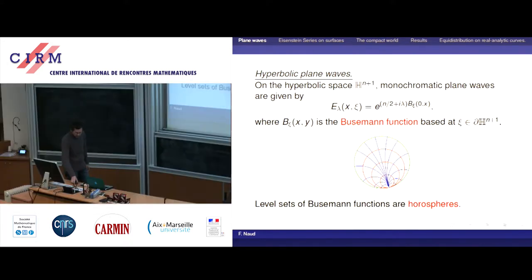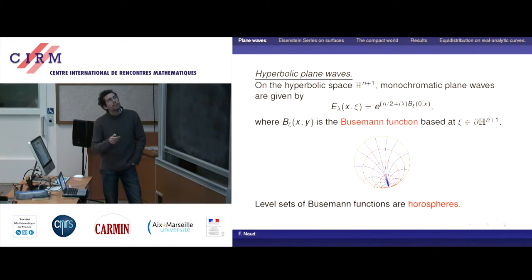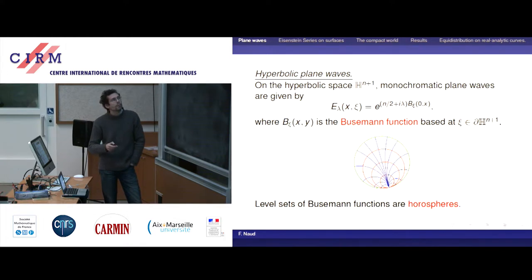In the hyperbolic setting, what replaces the standard plane waves are given by these expressions. There is a slightly different factor, related to the bottom of the continuous spectrum of the Laplacian — it's just a convention to make things easier. What replaces the Fourier phase is given by so-called Busemann functions, and the level sets of Busemann functions — the wavefronts — are given by horocycles. Xi is living at infinity; it is the direction of propagation of the plane waves.